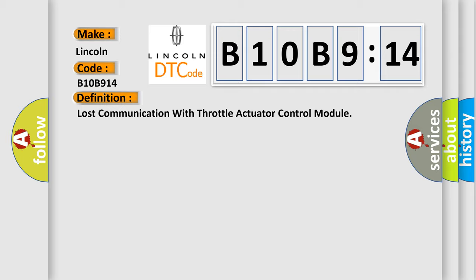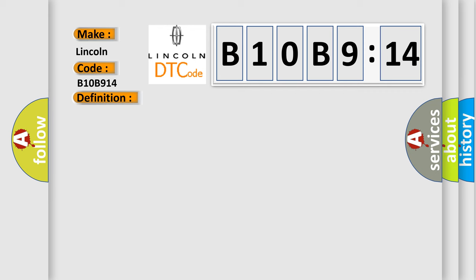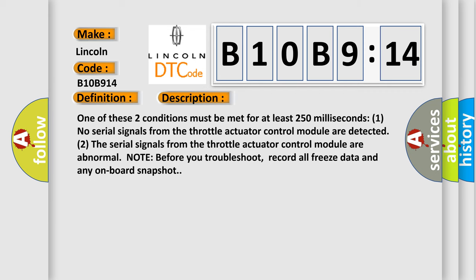Now this is a short description of this DTC code. One of these two conditions must be met for at least 250 milliseconds: One, no serial signals from the throttle actuator control module are detected. Two, the serial signals from the throttle actuator control module are abnormal.